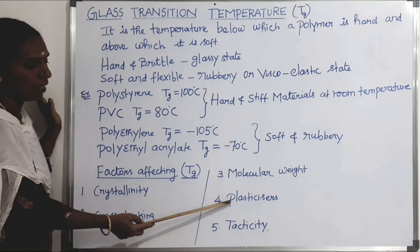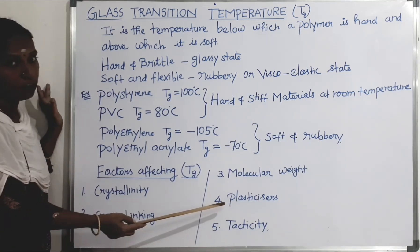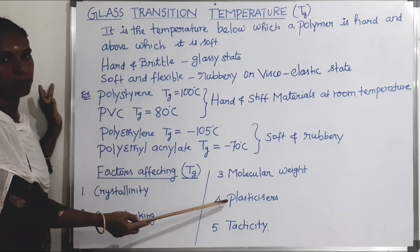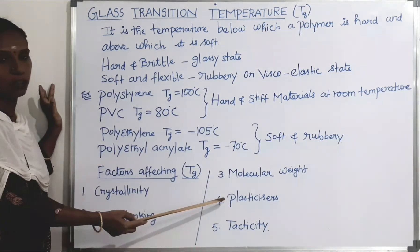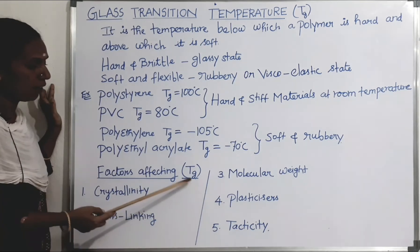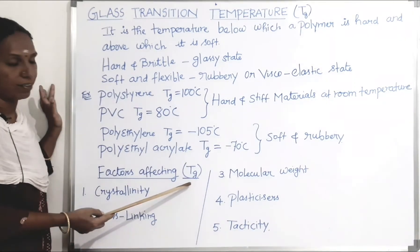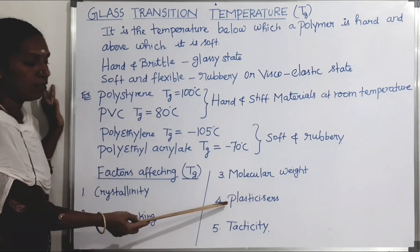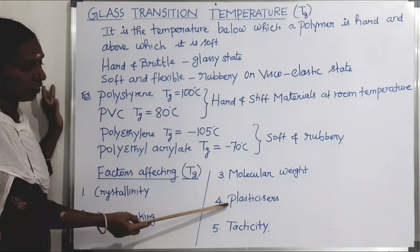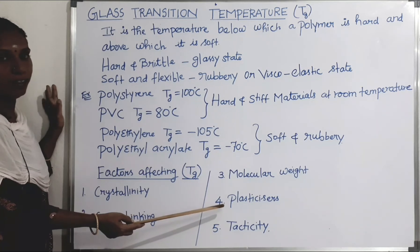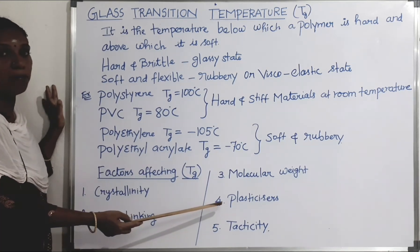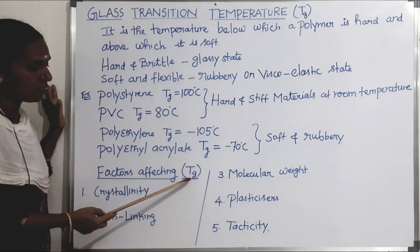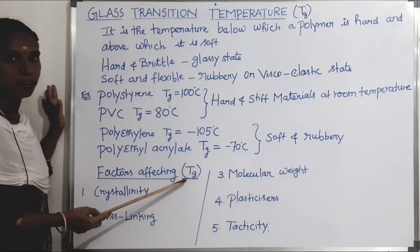The fourth factor is plasticizers. Addition of plasticizers decreases the intermolecular forces of attraction between the polymer chains, and so the Tg value decreases.